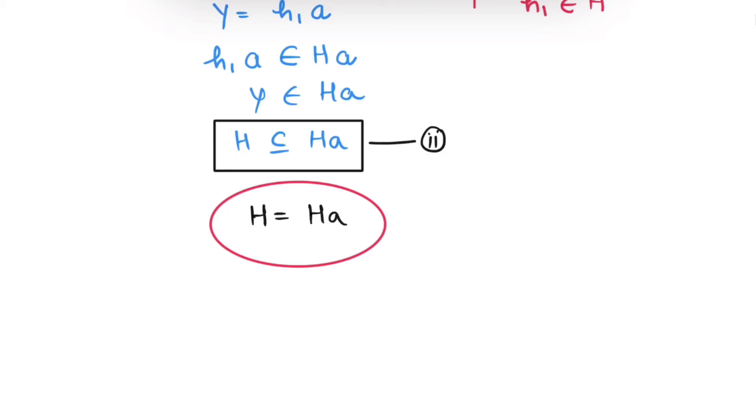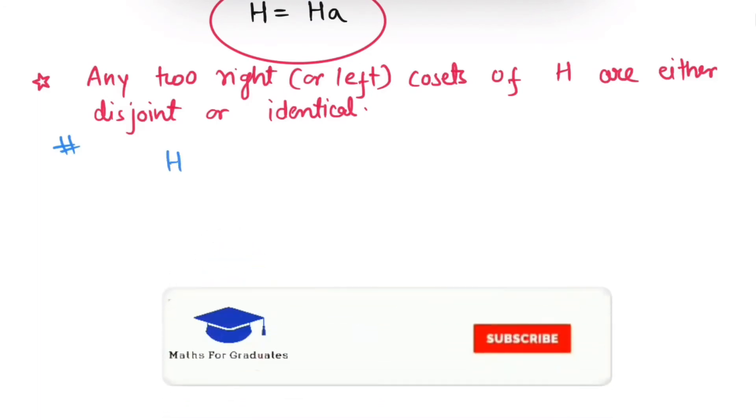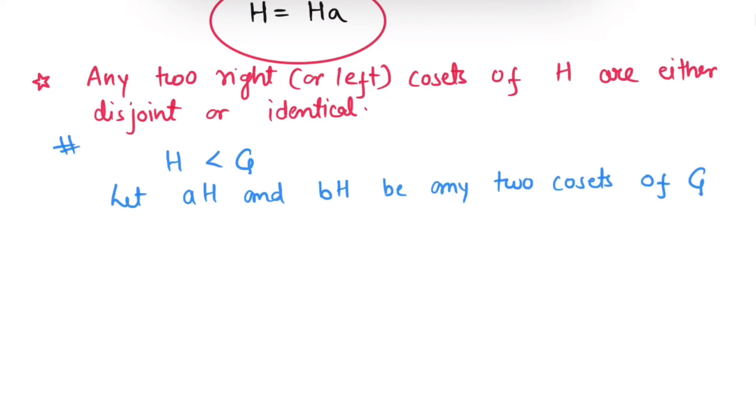Now, let us see another most important property, property number 2. Any two cosets are either disjoint or identical. Let H is any subgroup of G, and let us assume that AH and BH be any two cosets of G. Now, let us assume that these cosets are not disjoint. That is, AH intersection BH is not equals to Phi.